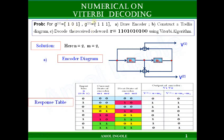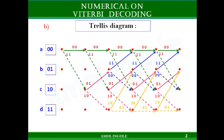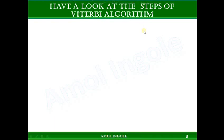This is the response table for this numerical. Using the generator sequences you can easily draw and reconstruct this response table. The trellis diagram for this numerical is shown here — you can see the earlier video on trellis diagrams to understand how this trellis diagram is drawn.